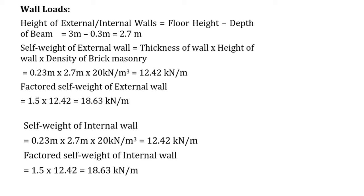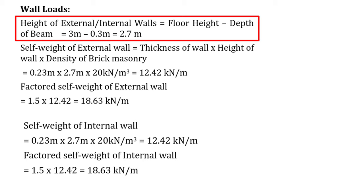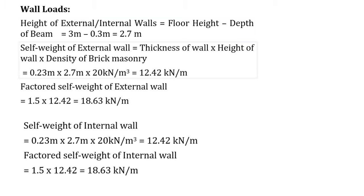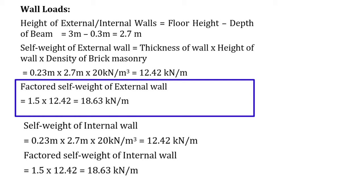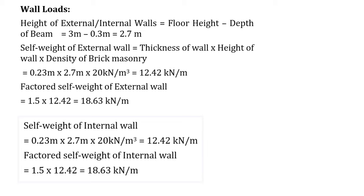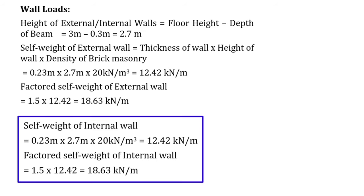To calculate wall loads, we need the height of the wall, which equals floor height minus depth of beam: 3 m − 0.3 m = 2.7 m. Self weight of external wall equals thickness × height × density of brick masonry = 0.23 × 2.7 × 20 = 12.42 kN/m. Factored self weight equals 1.5 × 12.42 = 18.63 kN/m. Since both external and internal walls have the same dimensions, the self weight of internal wall is also 12.42 kN/m, with factored self weight of 18.63 kN/m.